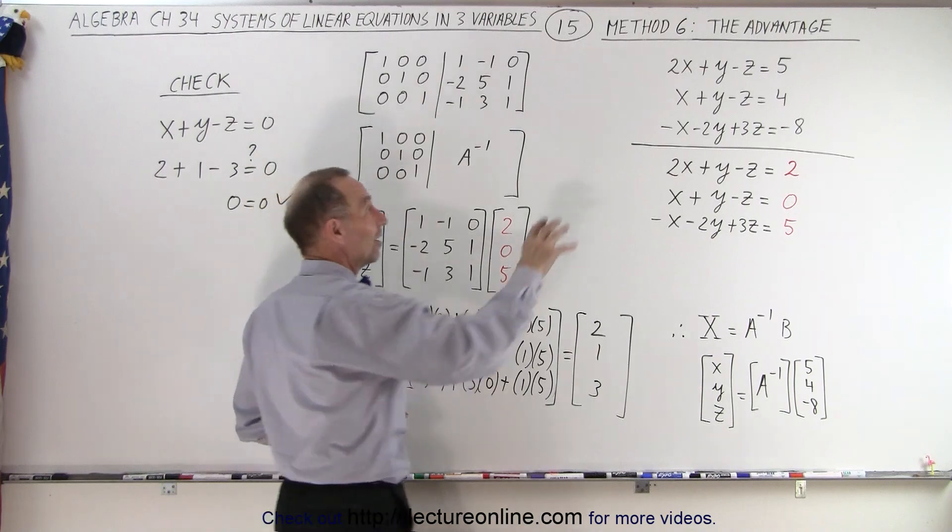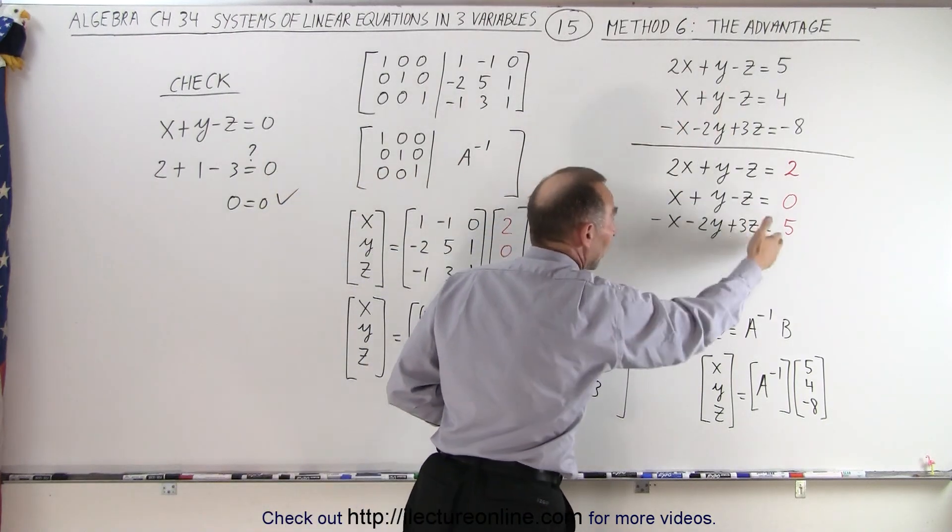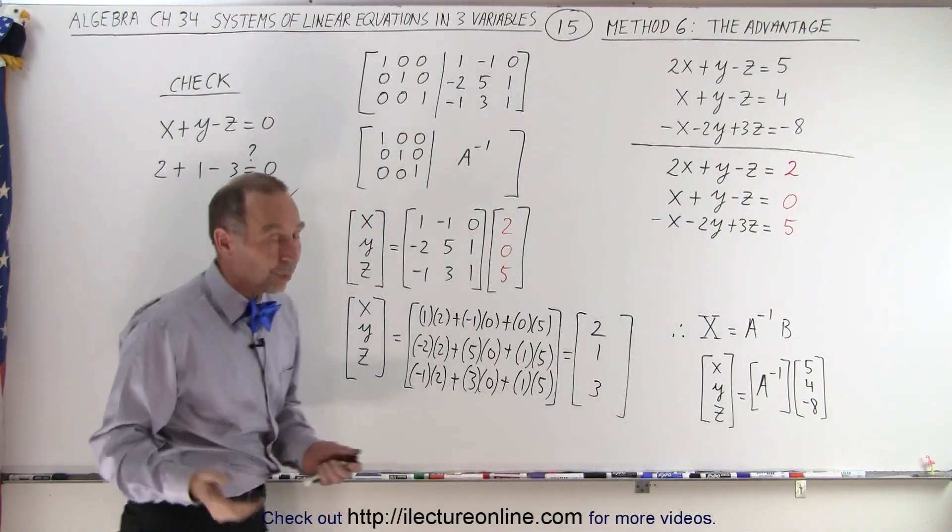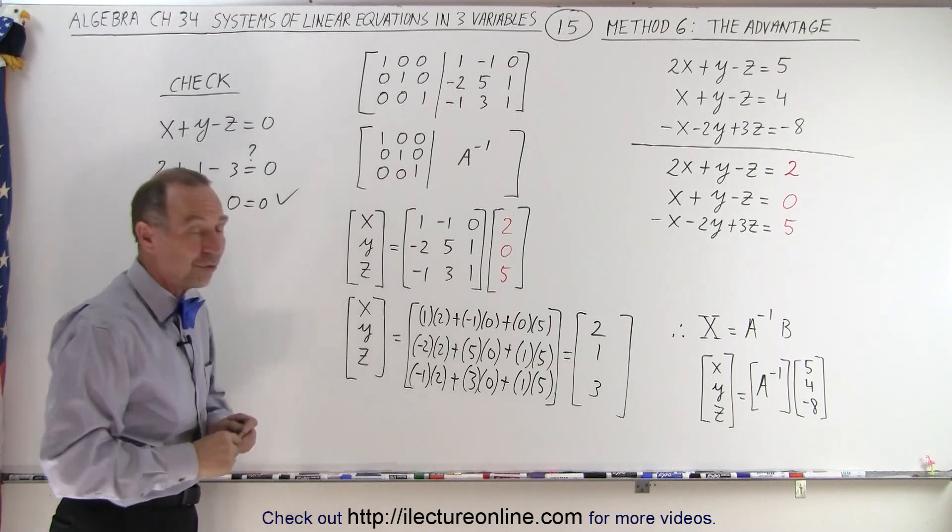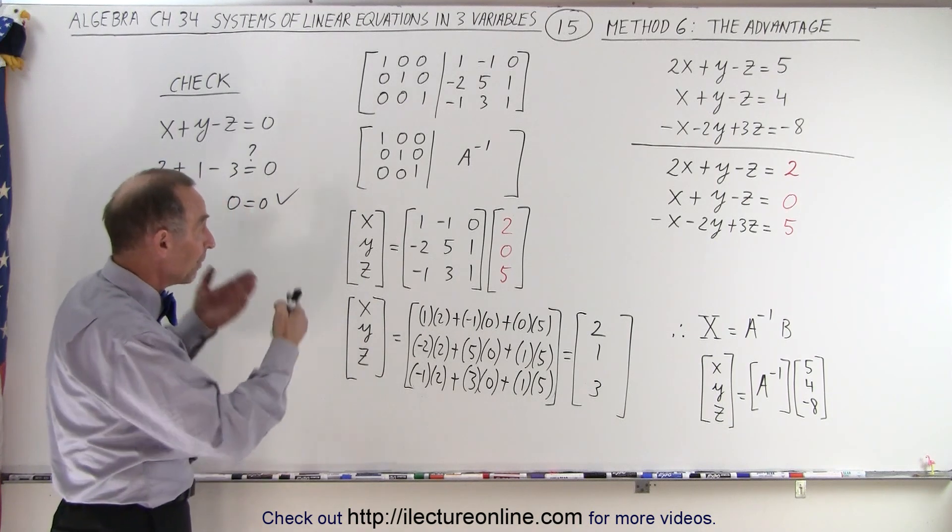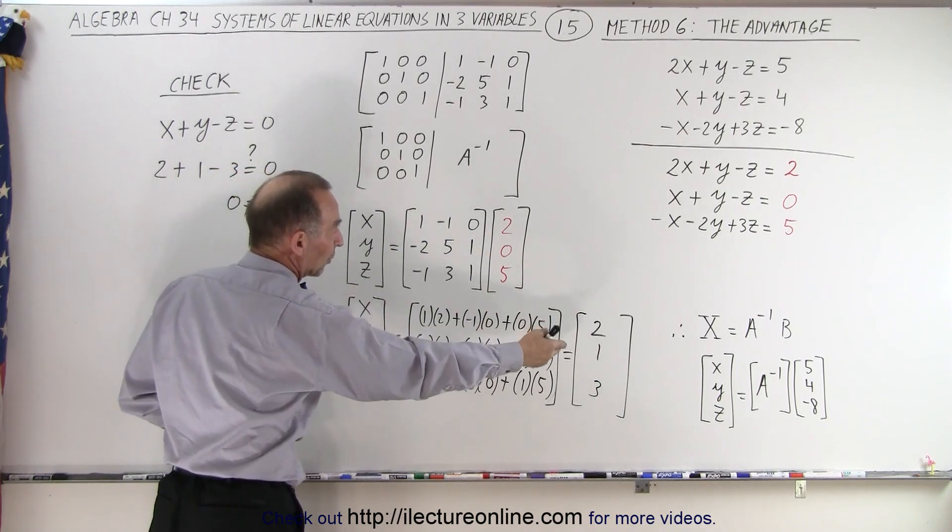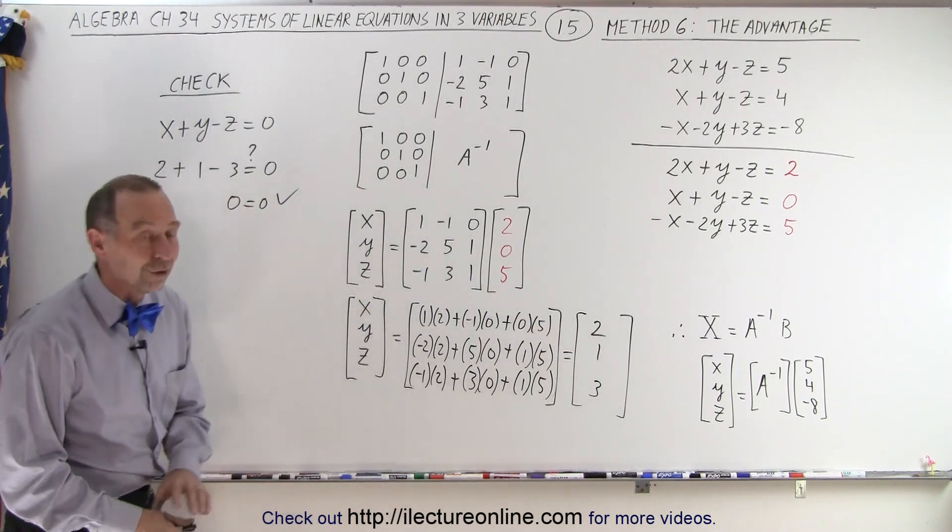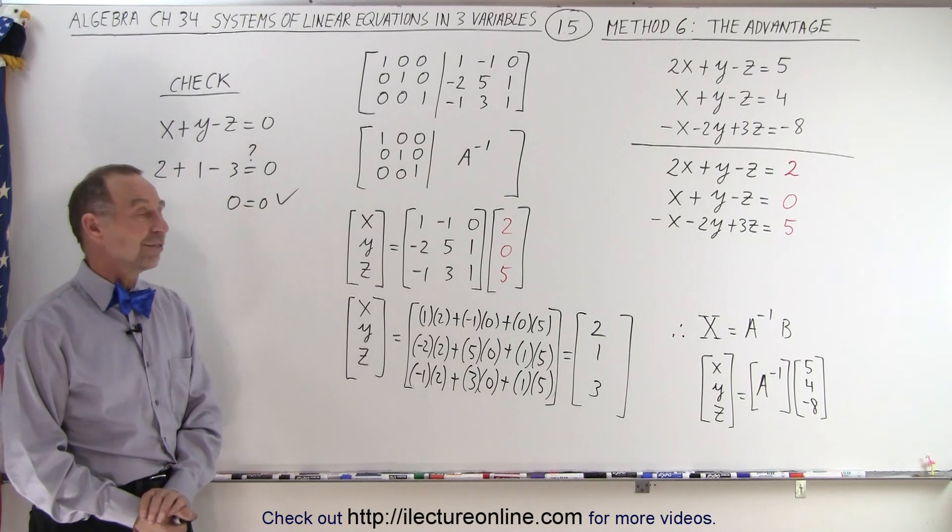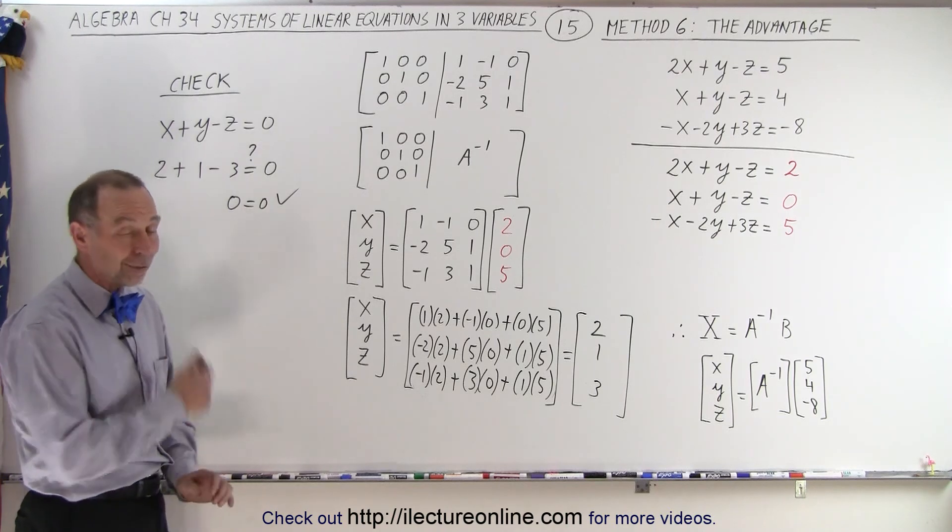So if you're wondering, is there some logical benefit to this method? Yes, if you have multiple sets of equations where only the right side changes, and there's examples where that happens in certain applications of finance and math, then that makes it easy. All we have to do is just simply change the B matrix, crank it out real quick, and we get the new values for that particular set of equations. And that is how it's done.